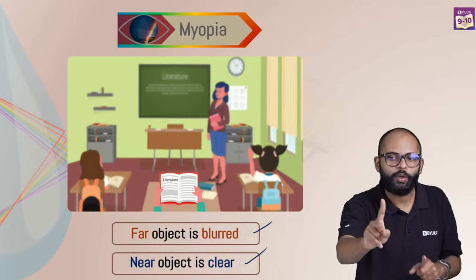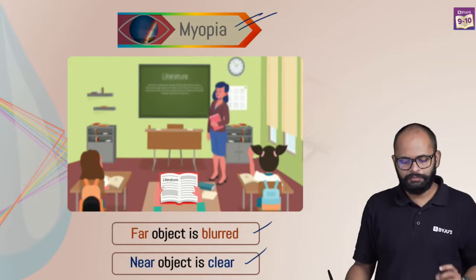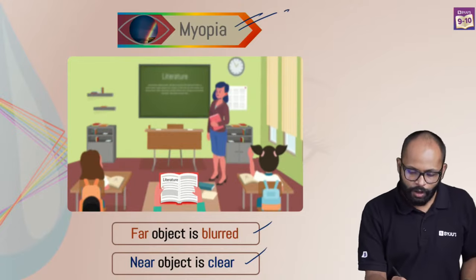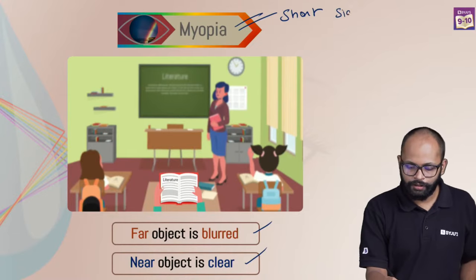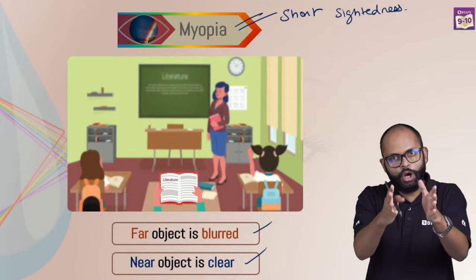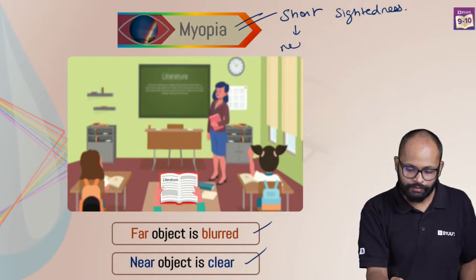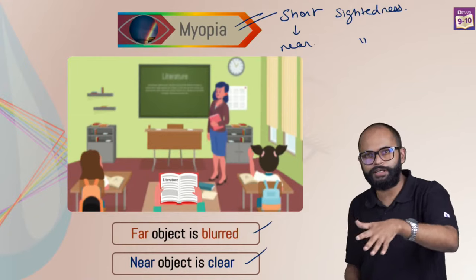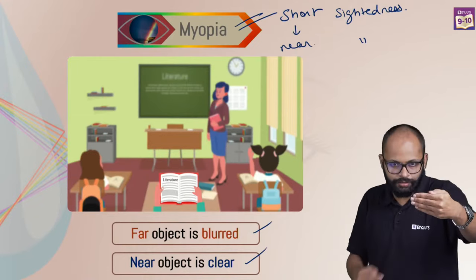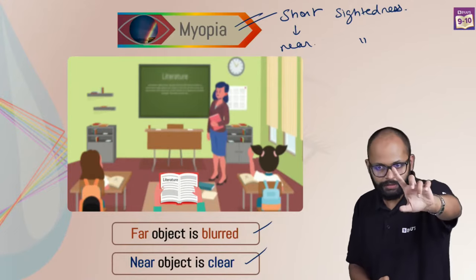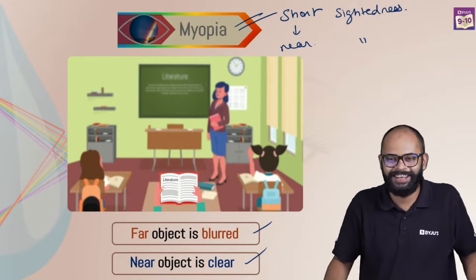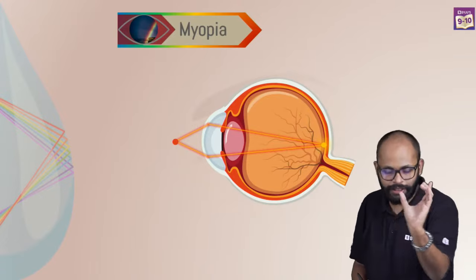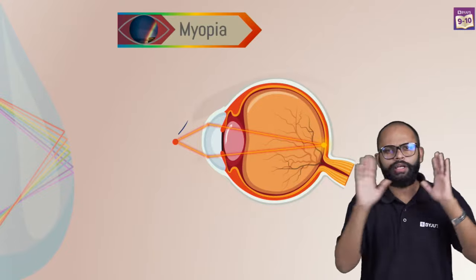A trick to remember: myopia is a short word — short sightedness. Near sightedness or short sightedness means things which are near, or at short distance, are okay; far ones are not okay. Myopia is a short word meaning short sightedness.